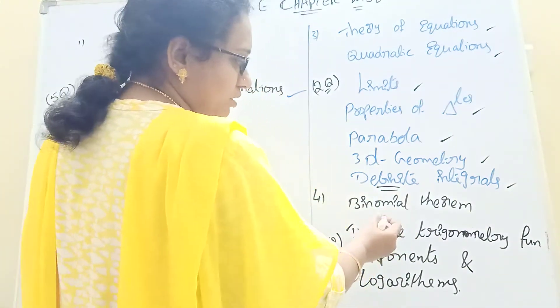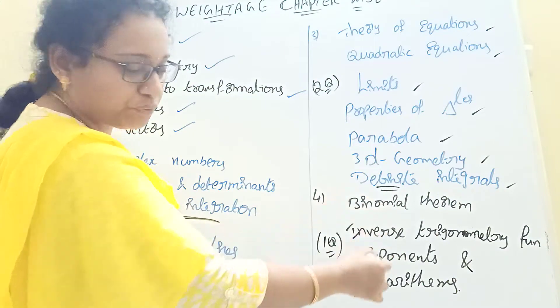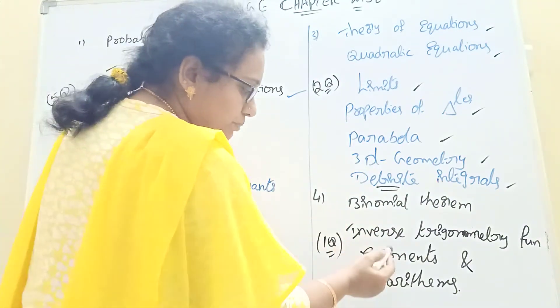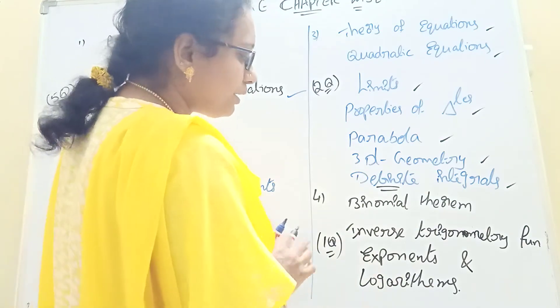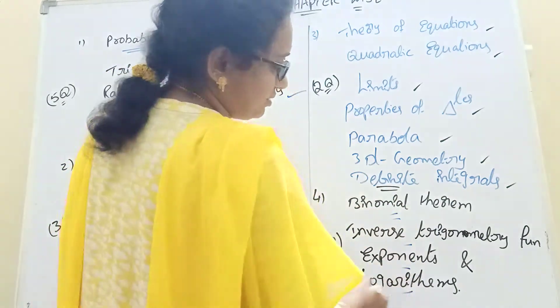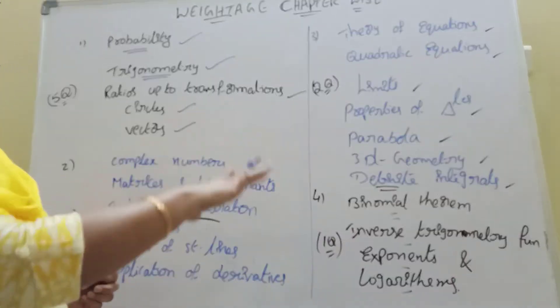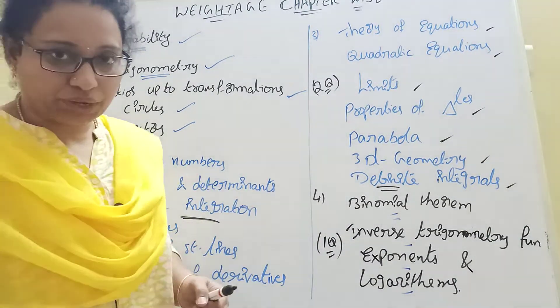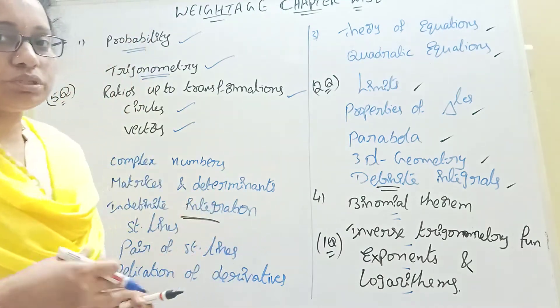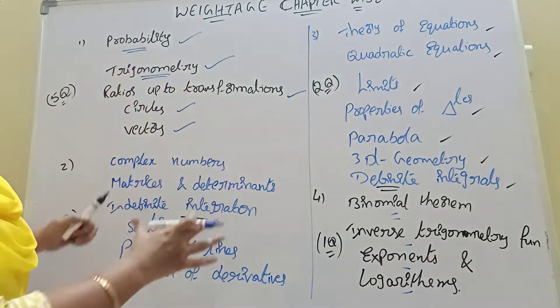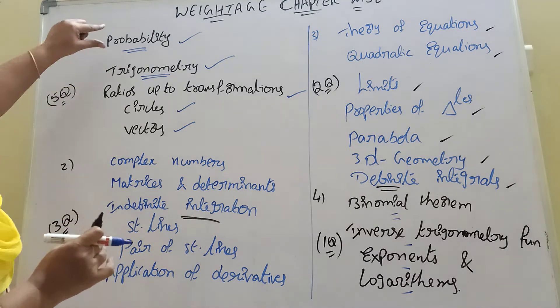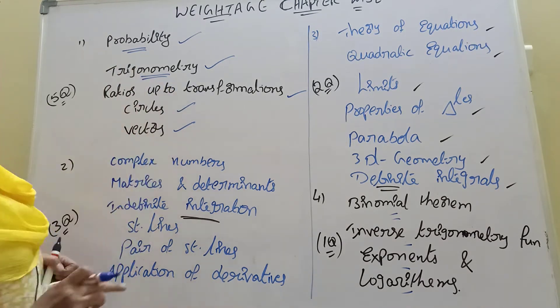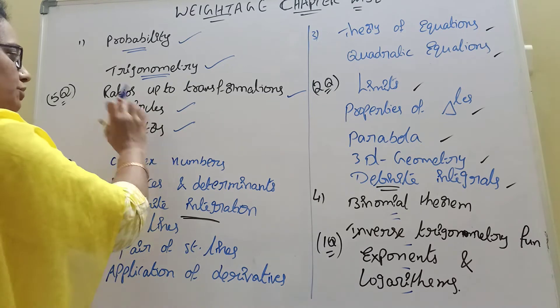Binomial, inverse trigonometry, function, exponents, logarithms. We have 3 questions. Then you can see 2 circles which actually becomes 5.